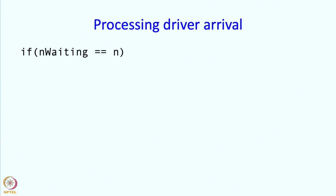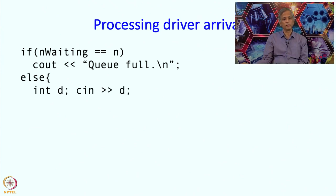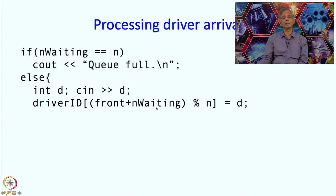So how do we process a driver arrival? First of all if nWaiting equals n, then that means that our entire array is full of drivers. So we do not have space to put in this new driver, so in which case we are going to say, well our queue is full, please try later. But if it is not n, if we do have space, then we get the driver details, so the driver might type in some ID or maybe some phone number, whatever convention we have and we are going to place it in the position where we said the next driver ID should be put in and that is front plus nWaiting mod n and whatever we read in is going to be put in that position. And at this point we will increment nWaiting. Because we got a new driver and so there is one additional driver waiting.